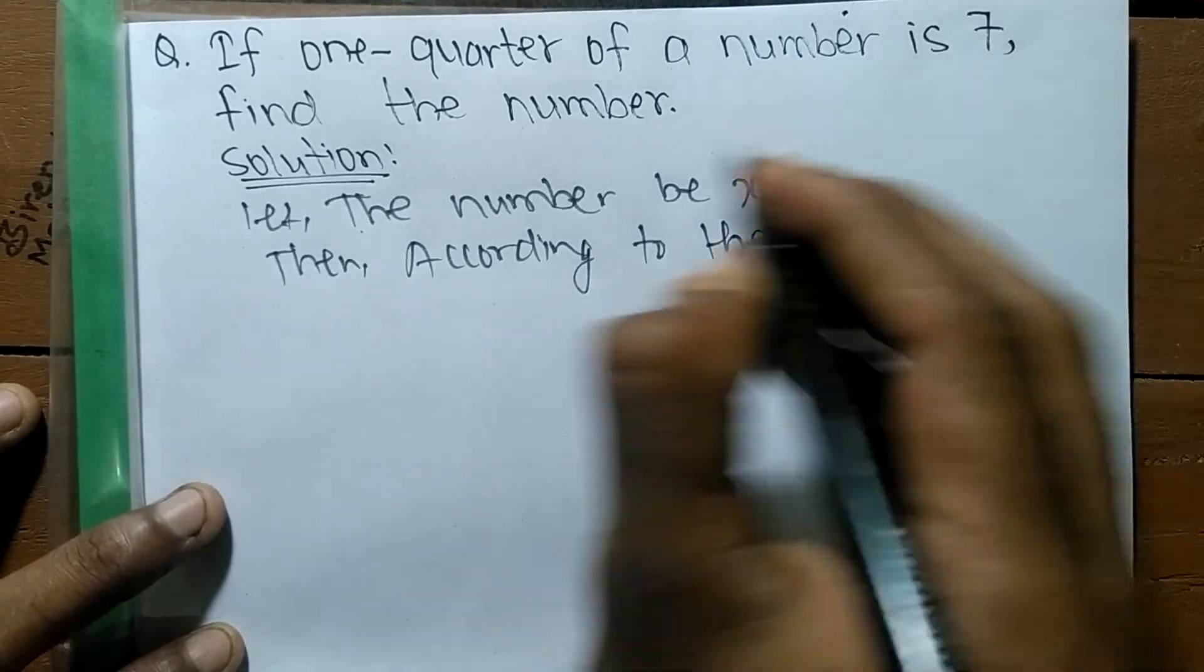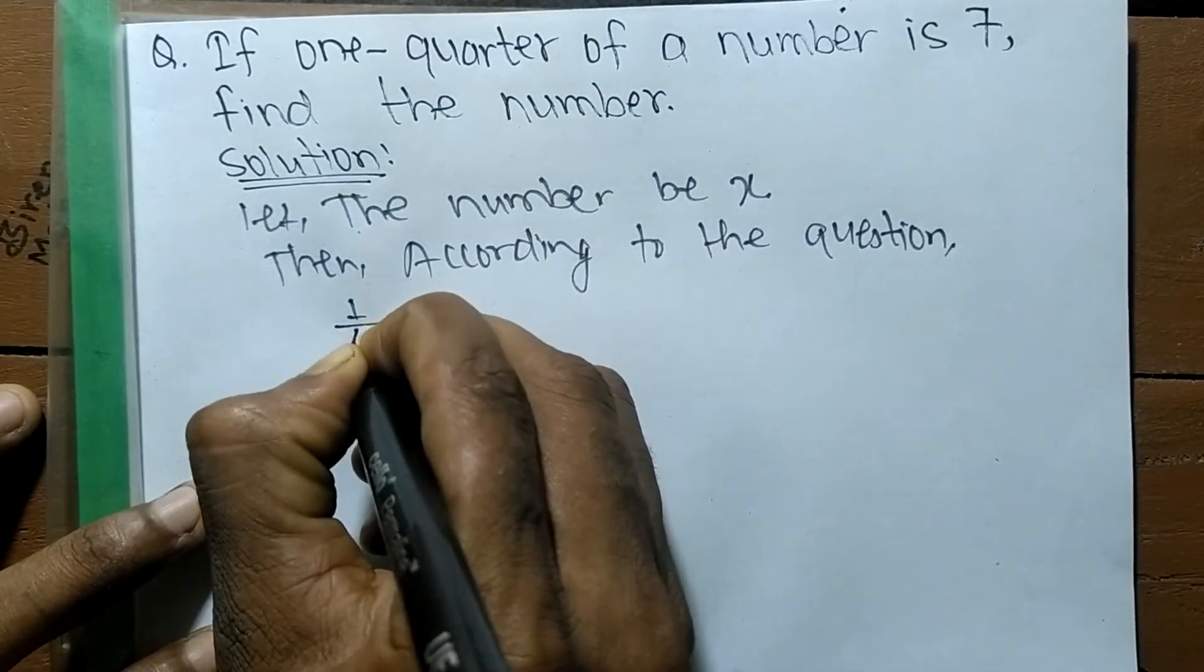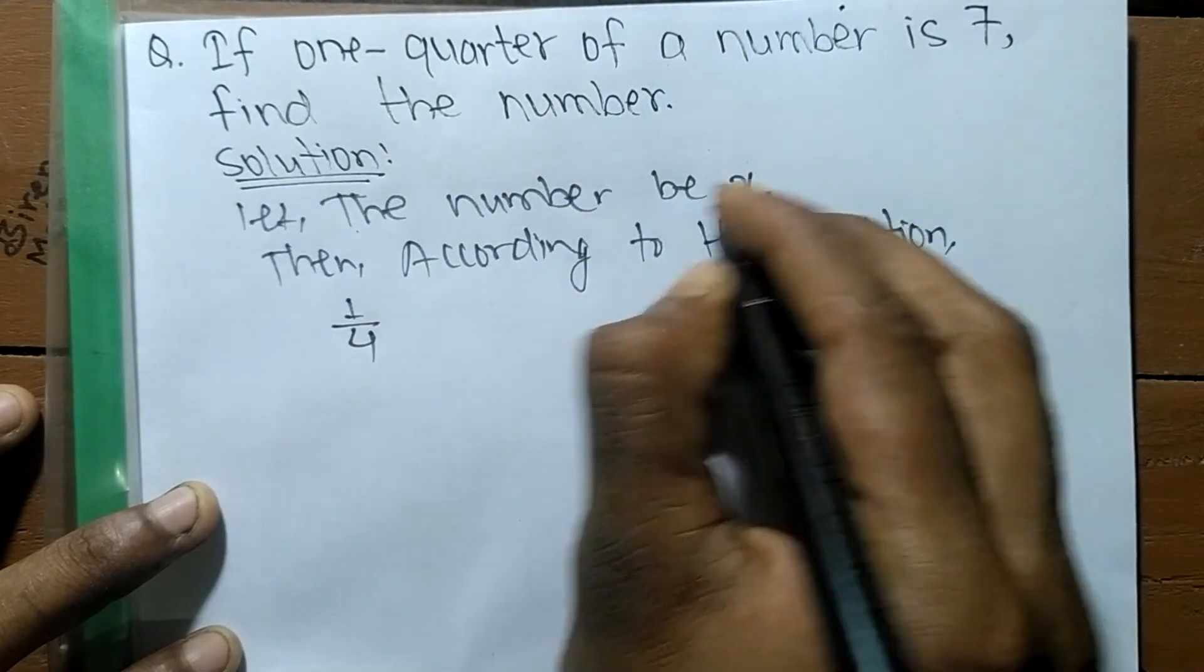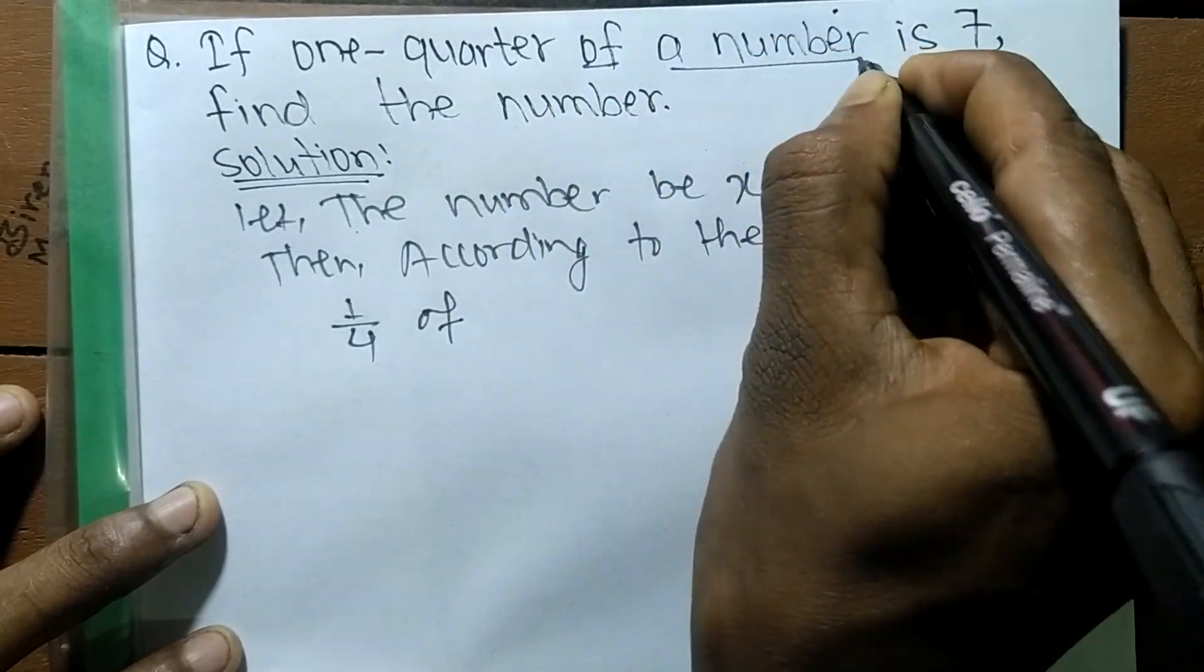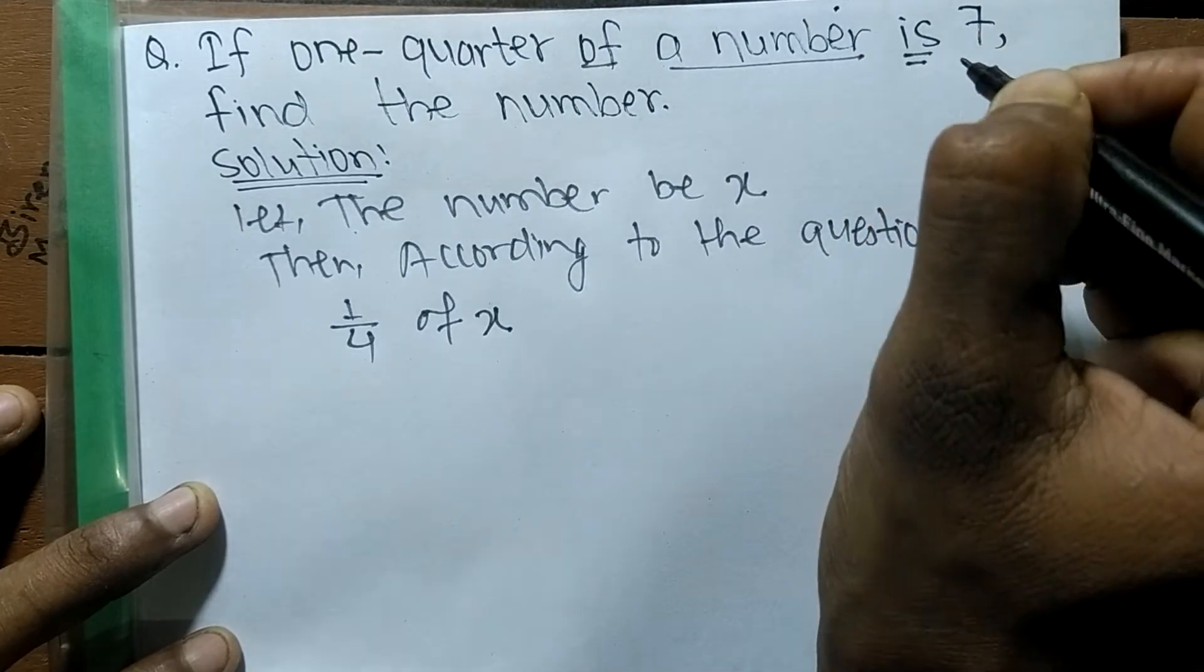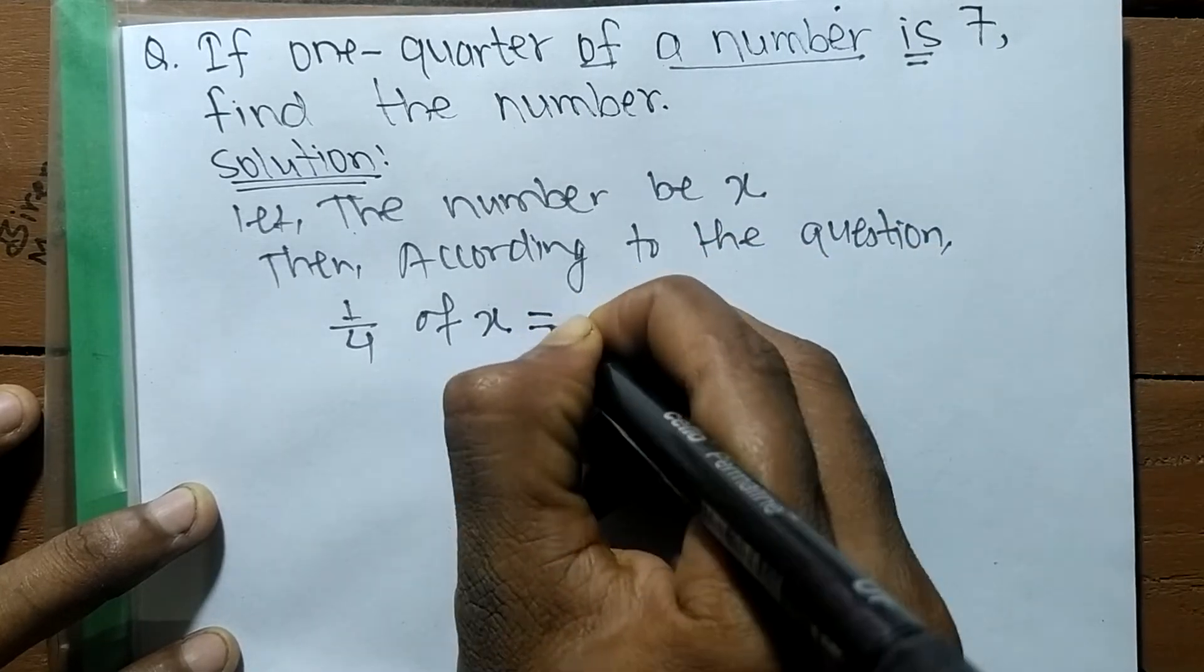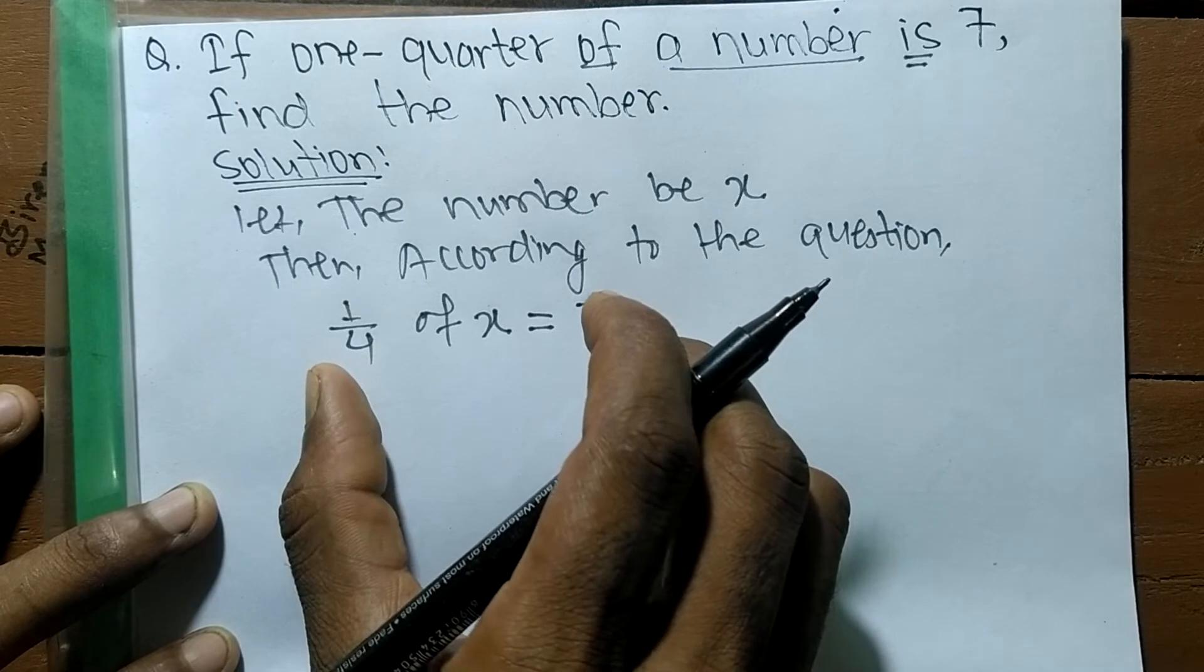According to the question, here is given one quarter. One quarter means it is 1/4 of our number. We let the number be X, so of our number X. And here is 'is', so when there is 'is' in a word equation it means that it is equal to. Is 7.